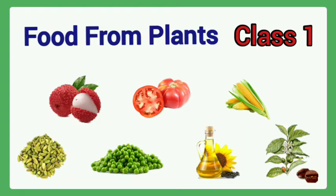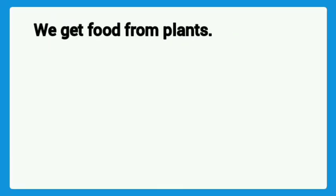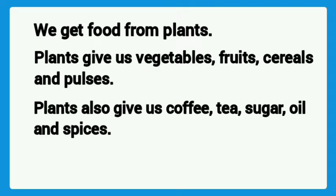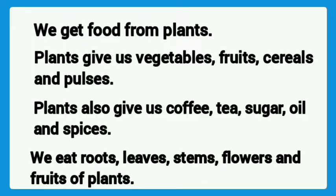Food from plants. We get food from plants. Plants give us vegetables, fruits, cereals and pulses. Plants also give us coffee, tea, sugar, oil and spices. We eat roots, leaves, stems, flowers and fruits of plants.